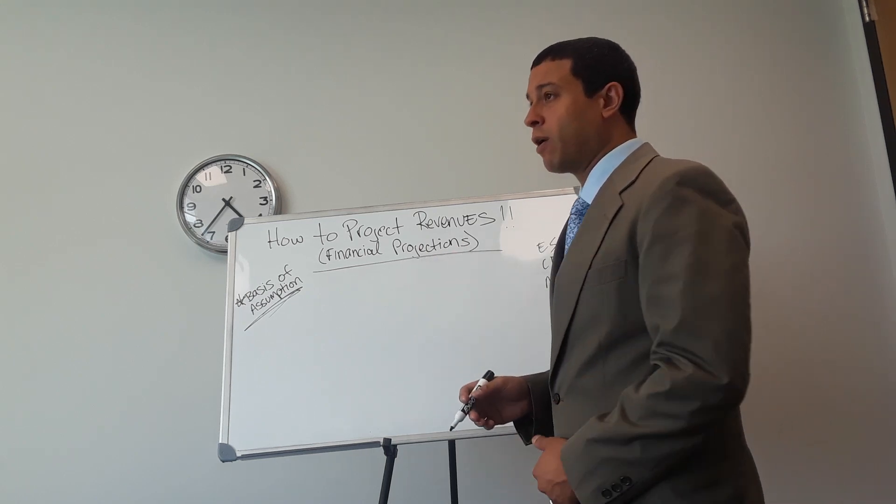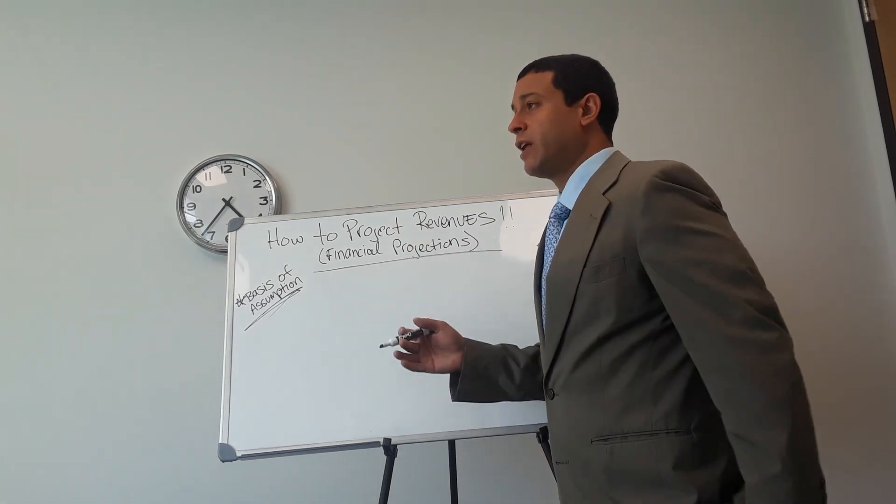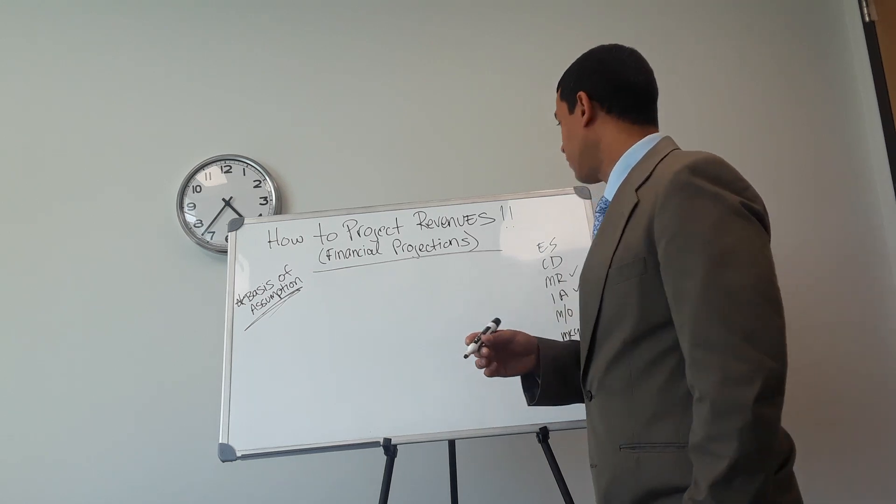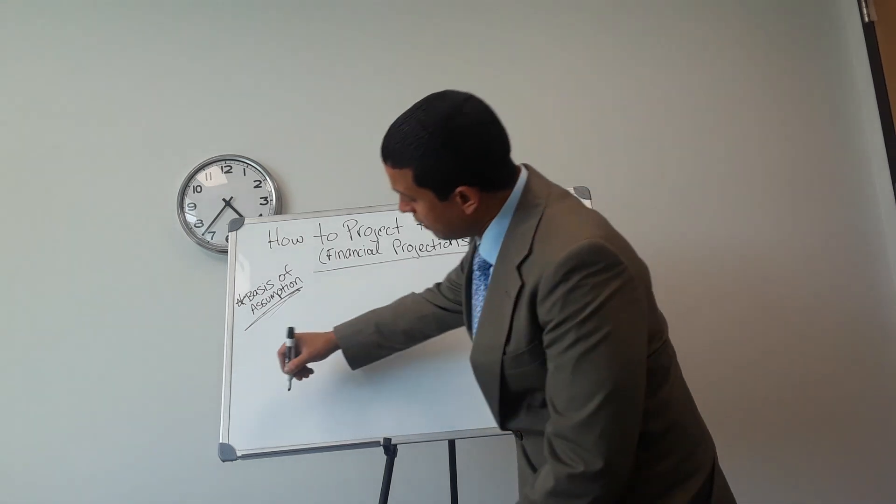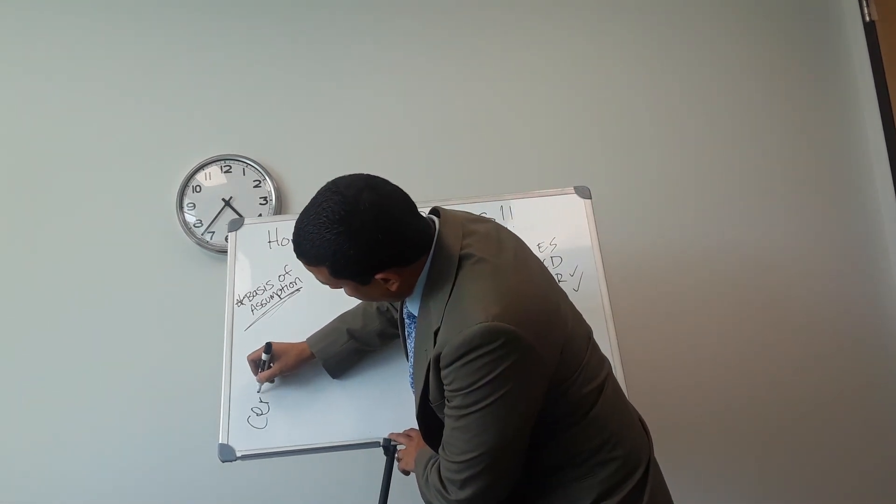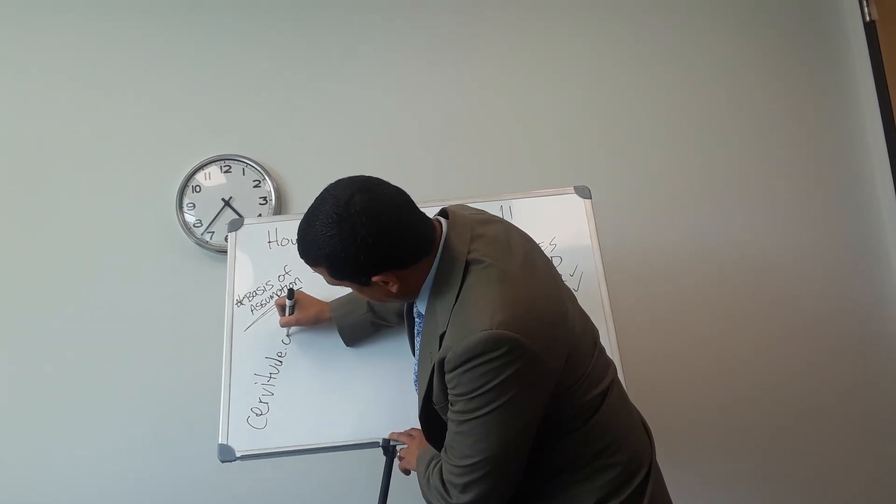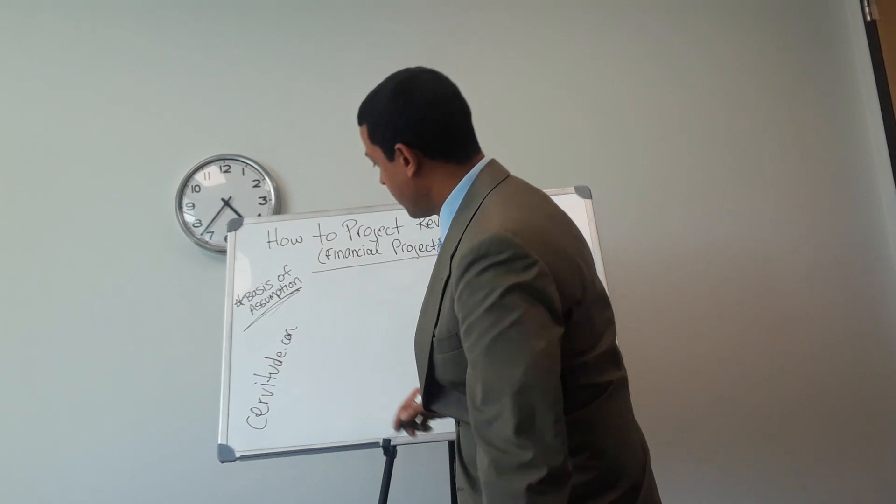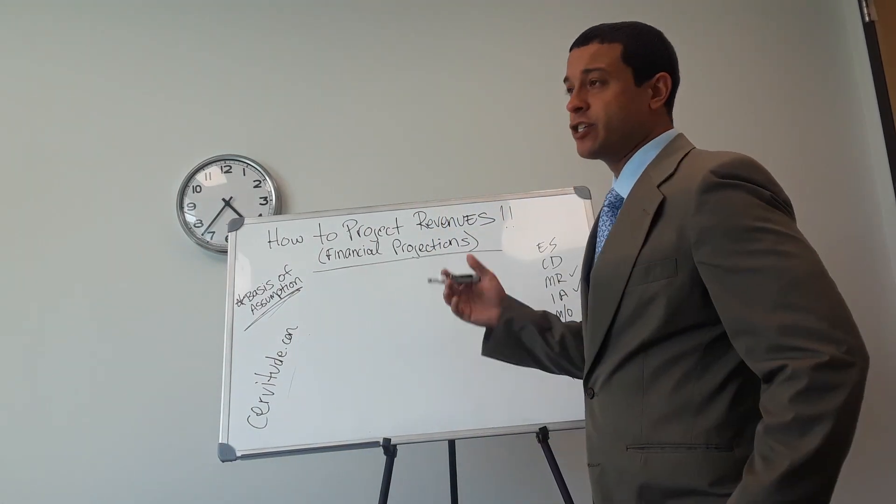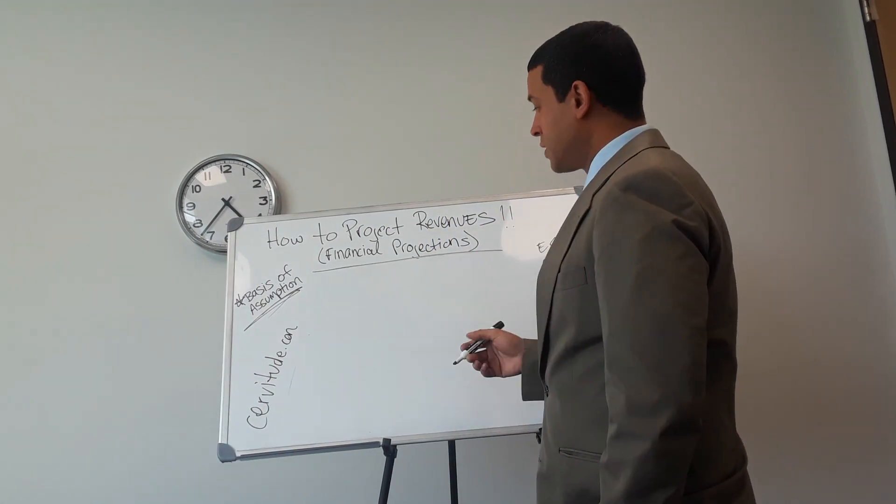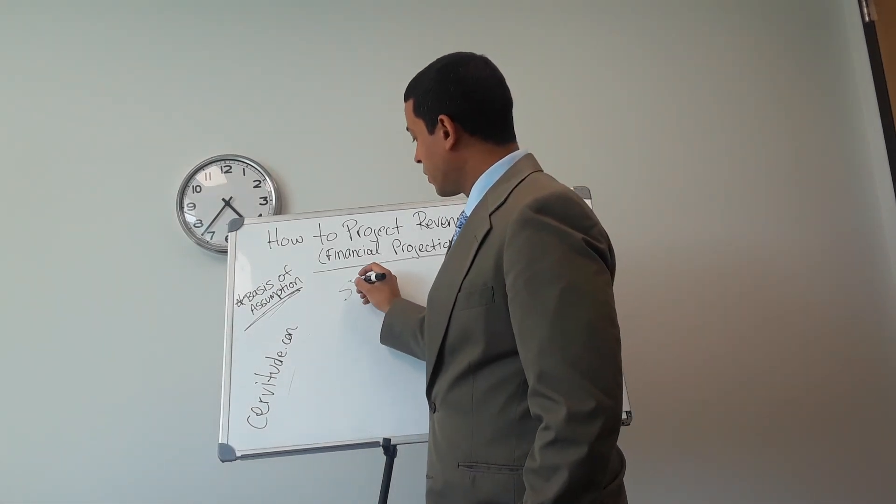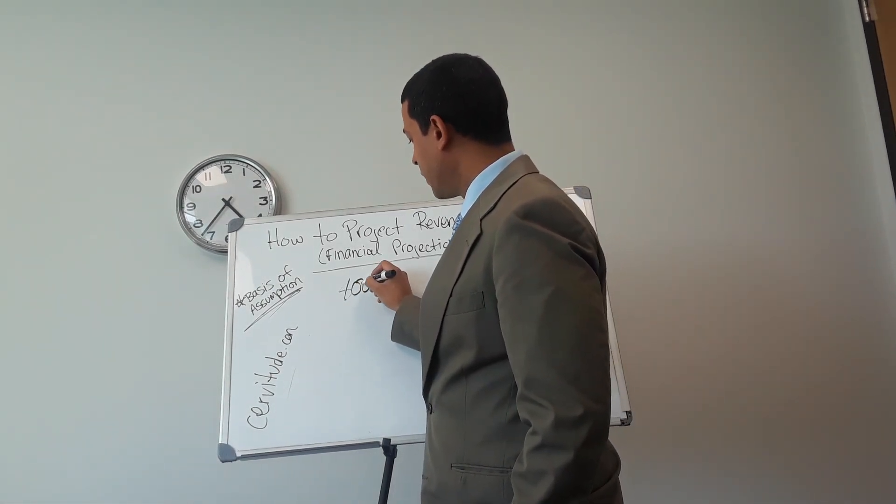You've never started a business before. You want to start one here in Shelton, Connecticut where Servitude Intelligent Relations office is. And by the way, if you haven't seen our website, visit our website, servitude.com. Back to the financial projection. Let's say you're in Shelton, Connecticut.